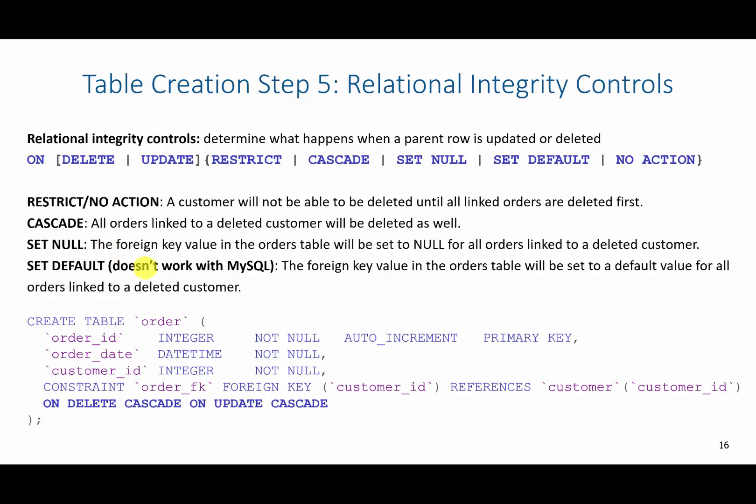And then set default, which does not work in MySQL, would allow you to set the values that were pointing to the customer that was deleted to a different value. So it would look like this. We continue with our constraint line. There is no comma here. We just add on delete cascade, on update cascade, if we wanted to cascade those results.